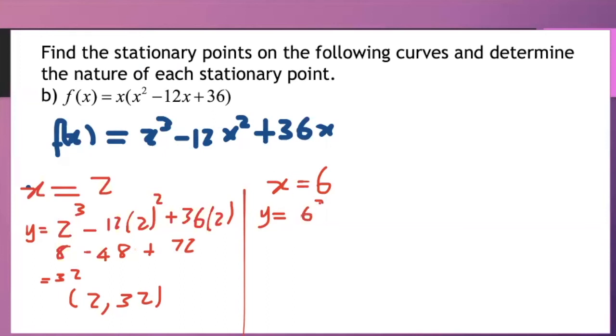The next when x is equal to 6 I will substitute 6 wherever I see x. So I have 6 cubed minus 12 times 6 squared plus 36 times 6. So 6 cubed is 216 then we have 6 squared that's 36 times 12 that's 432. 36 times 6 that's 216.